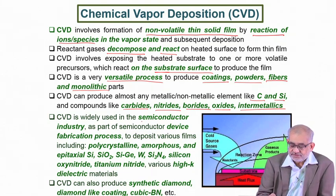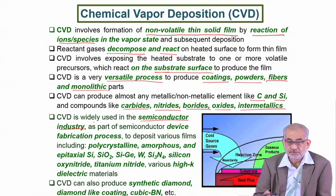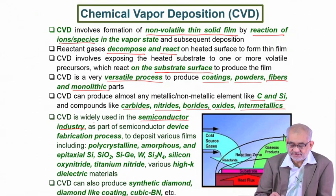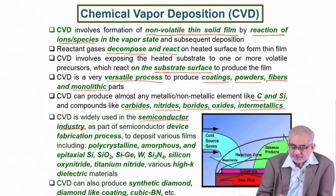CVD is widely used in the semiconductor industry, and as already mentioned, it offers the possibility of making tool coatings on metallic or ceramic inserts. We can deposit in polycrystalline form, amorphous form, or as epitaxial layers — for example, epitaxial silicon or silicon dioxide layers on semiconductor wafers or silicon-germanium wafers. Pure metals like tungsten can be produced from WO₃. Silicon nitride, silicon oxy-nitride, titanium nitride (TiN), and even various high dielectric materials can be deposited.